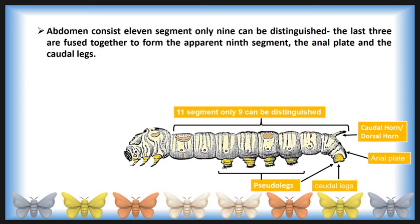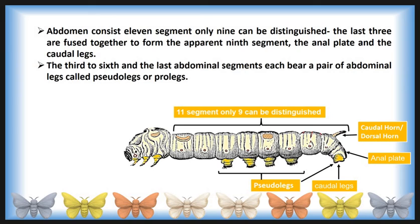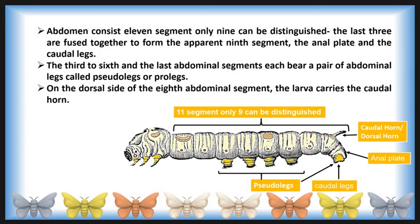The abdomen consists of 11 segments, though only 9 can be distinguished. The last three are fused together; the apparent 9th segment is the anal plate, and the paddle leg is part of this segment. The 3rd to 6th and the 8th abdominal segment each bear a pair of abdominal legs called pseudolegs or prolegs. On the dorsal side of the 8th abdominal segment, the larva carries the caudal horn, also called the dorsal horn. Each abdominal segment also has spiracles used for respiration.